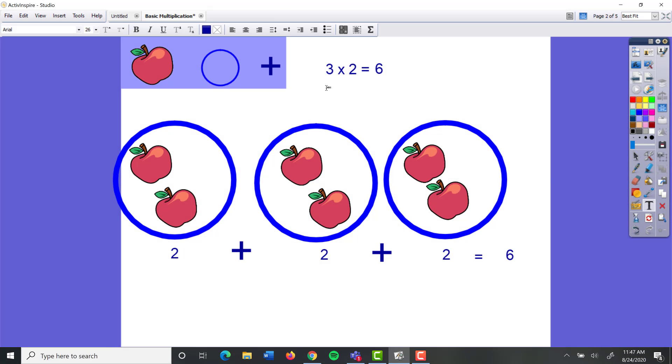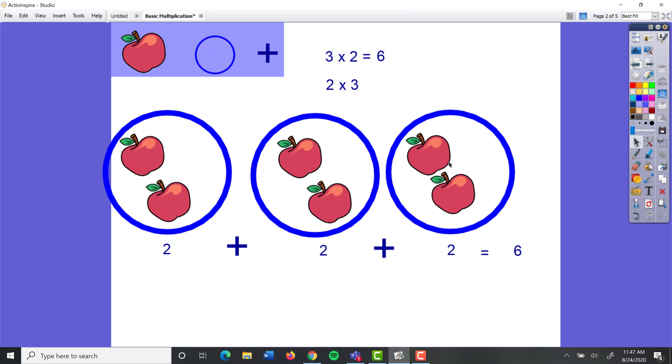Now you might be thinking, what if I mess up and I say two times three instead of three times two? Well, it doesn't really matter which way you write the numbers. So you could say two apples were given to me three times and think of it this way.